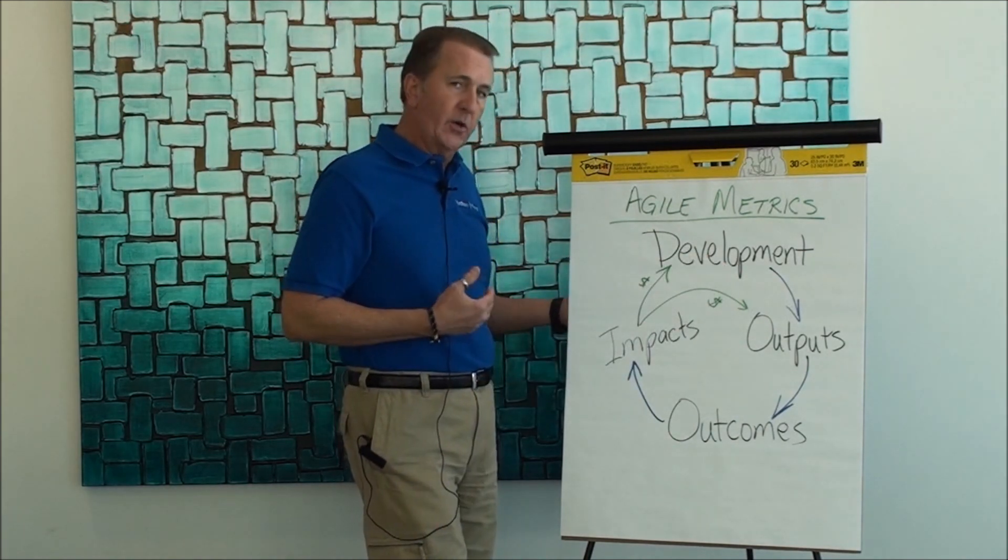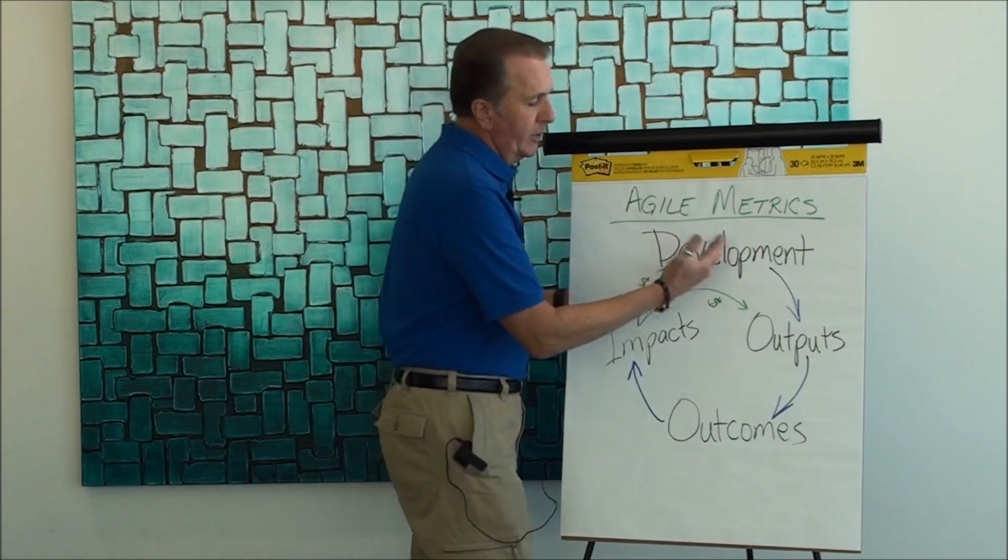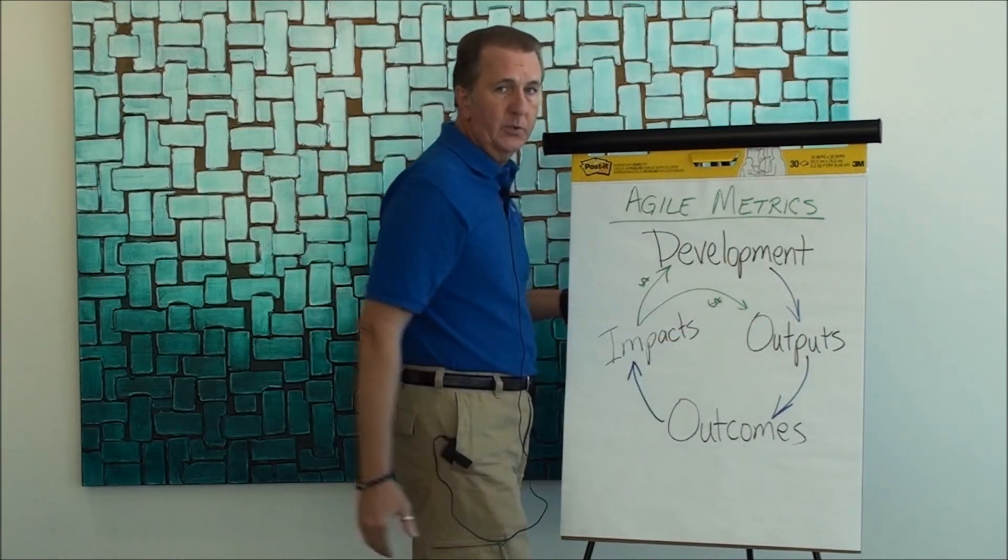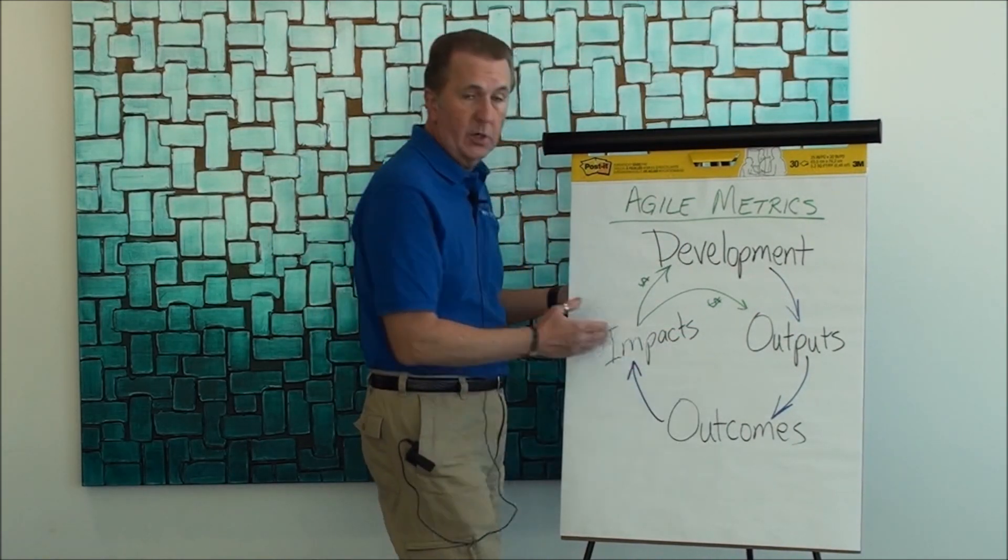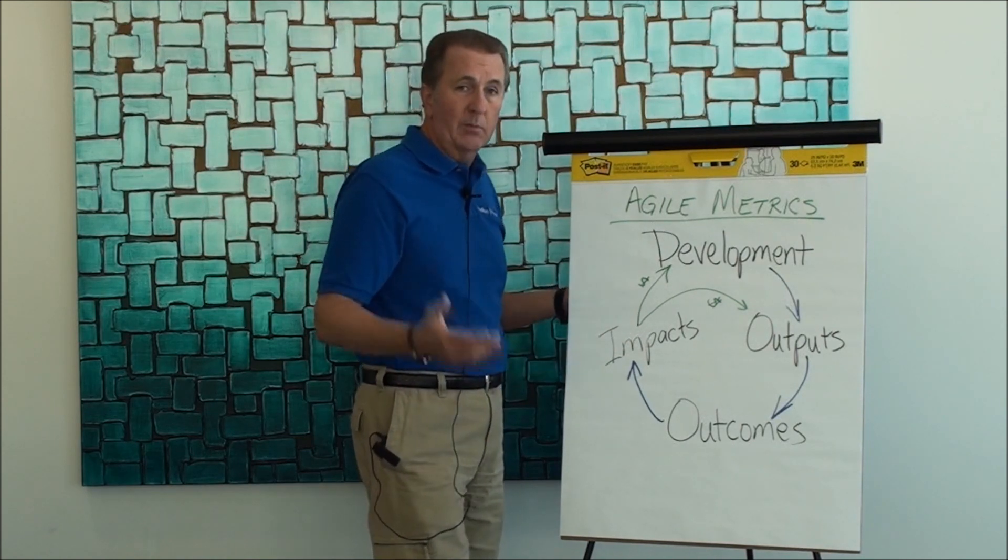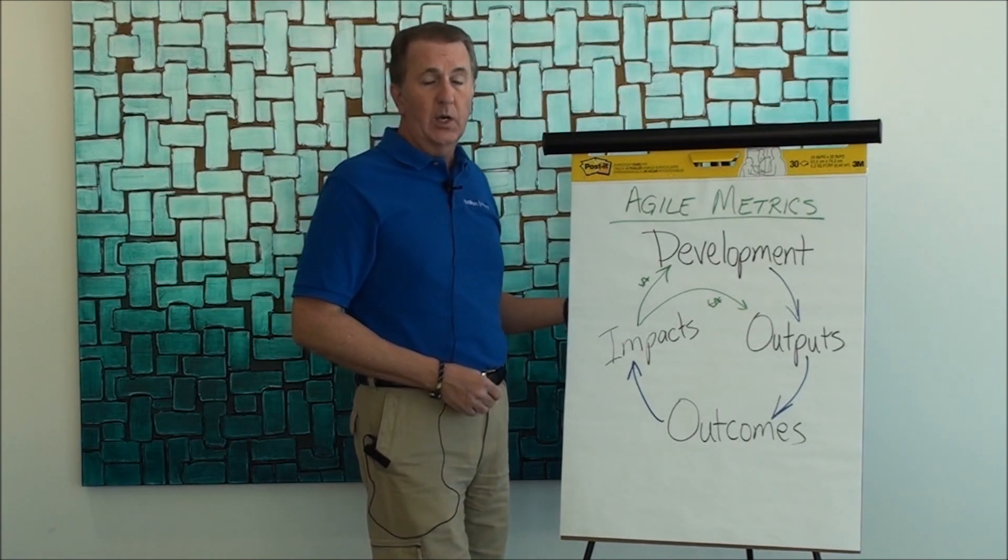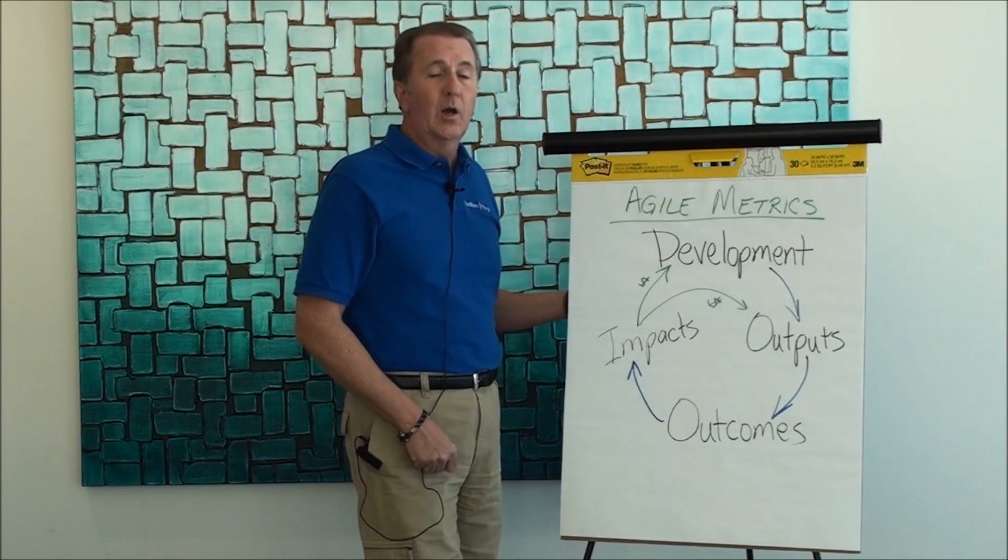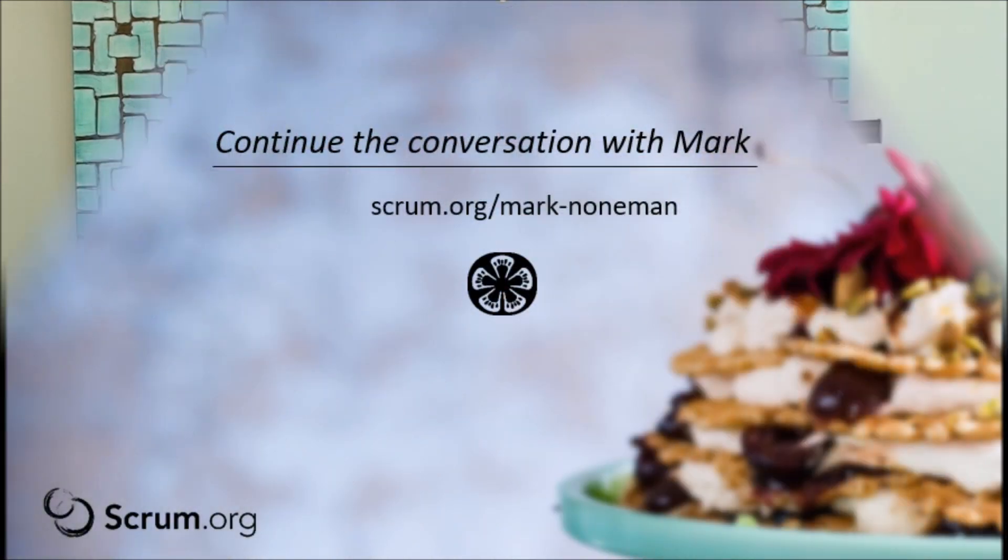So again, a simple model for thinking about different kinds of metrics so that we don't get stuck only measuring development and outputs, but we also measure our outcomes and our impacts. This is Mark Nonum. If you have more questions on Agile metrics, you can go to the scrum.org website or visit me on MadisonHenry.com.